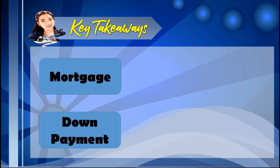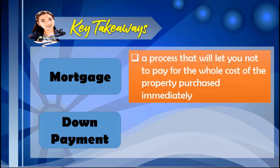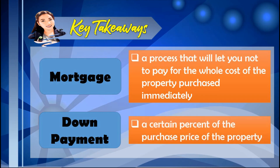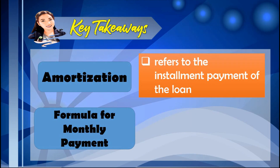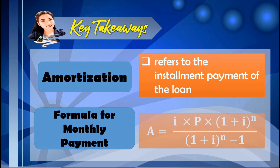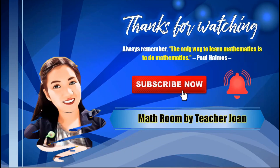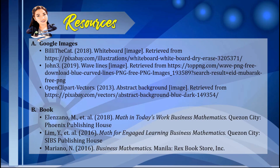Here are the important concepts to remember. Mortgage is a process that lets you avoid paying the whole cost of the property immediately. Down payment is a certain percent of the purchase price paid first. Amortization refers to the installment payment of the loan, with the monthly payment formula given accordingly. This concludes our discussion on mortgage and amortization. Thanks for watching — please like and comment, and see you in the next video!